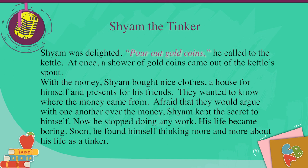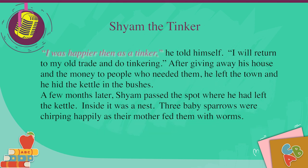With the money, Shyam bought nice clothes, a house for himself and presents for his friends. They wanted to know where the money came from. Afraid that they would argue with one another over the money, Shyam kept the secret to himself. Now he stopped doing any work. His life became boring. Soon he found himself thinking more and more about his life as a tinker. 'I was happier then as a tinker,' he told himself. 'I will return to my old trade and do tinkering.' After giving away his house and the money to people who needed them, he left the town and hid the kettle in the bushes.